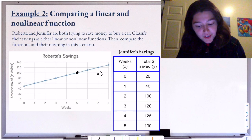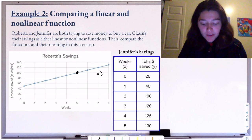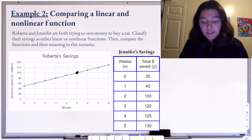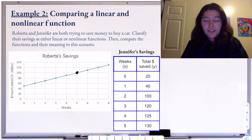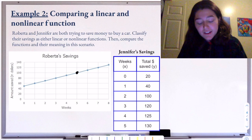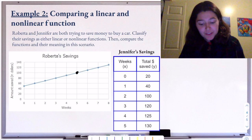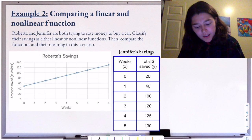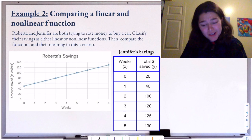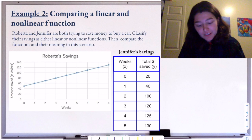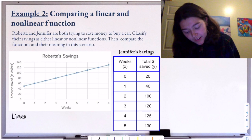Roberta and Jennifer are both trying to save money to buy a car. We need to classify their savings as either linear or nonlinear functions, then compare the functions and their meaning in this scenario. Starting with Roberta's — we're seeing this in graph form. It's pretty easy to figure out whether it's linear or nonlinear in graph form. Linear just means it's a line, and for Roberta this is a linear function because it's a straight line.